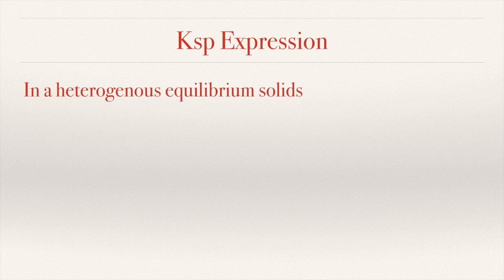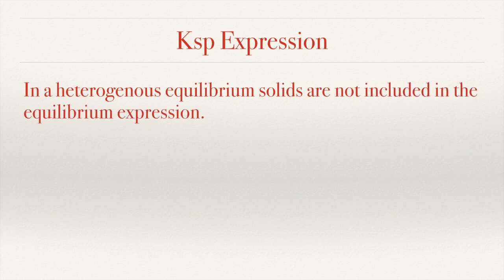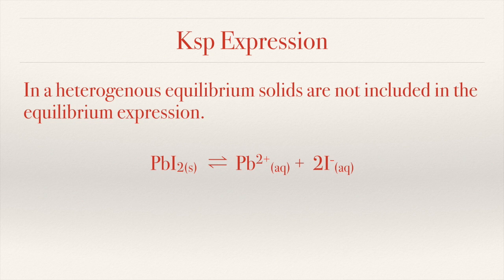One more example. For the reaction for the precipitation of PbI₂: the solid formed is PbI₂, which reversibly gives Pb²⁺ and 2 I⁻ ions, and the Ksp expression is [Pb²⁺] raised to 1 times [I⁻] raised to 2.